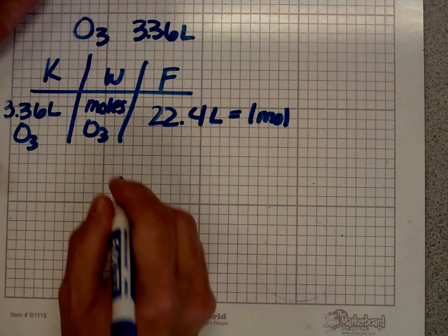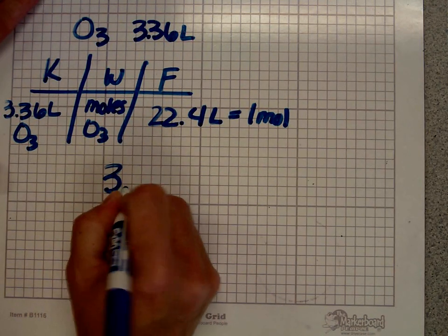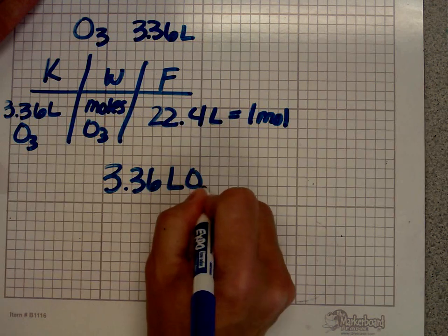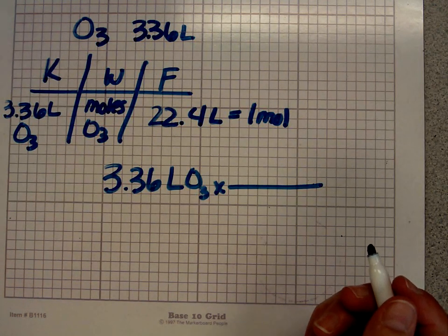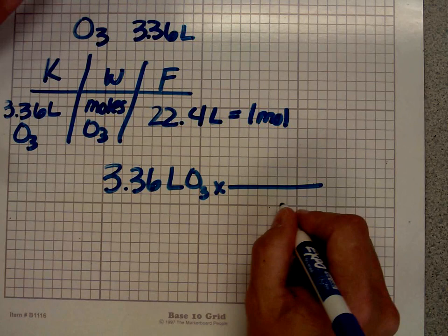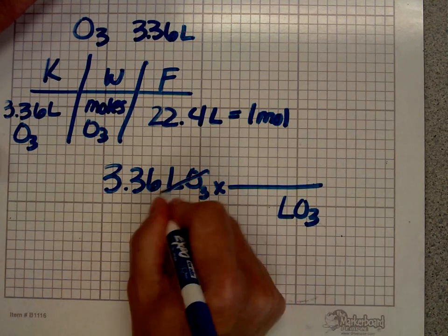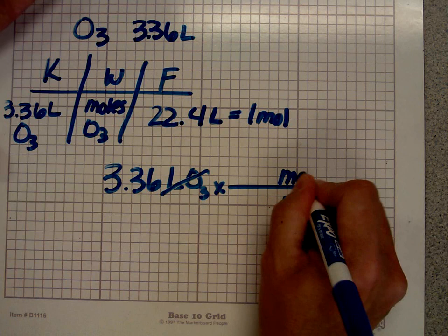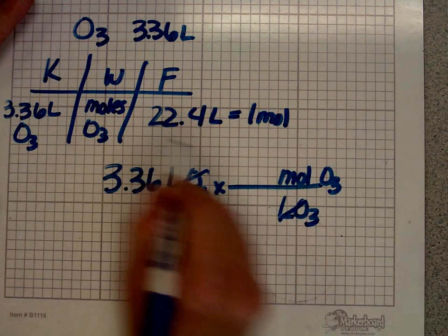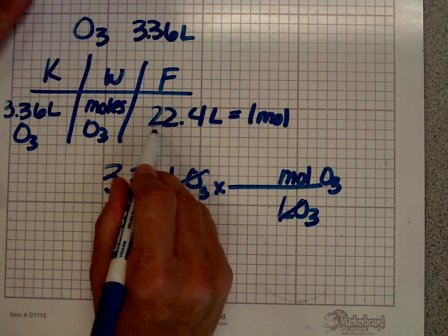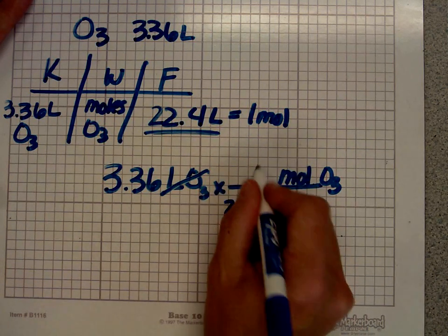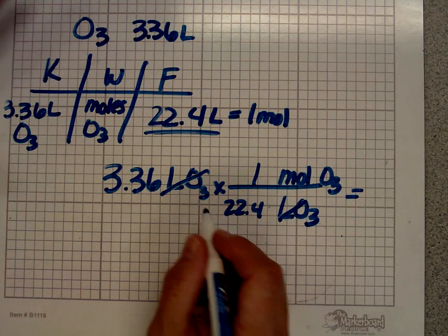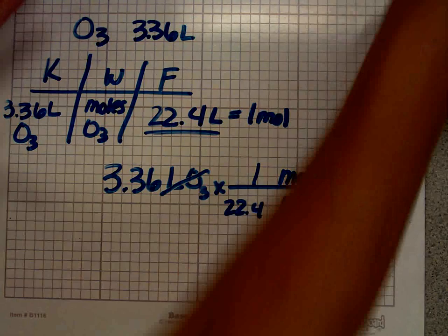The general format I always use is starting with what I know. I write down 3.36 liters of ozone and multiply it by something. I want to get rid of liters of ozone and be left with moles of ozone. The relationship is 22.4. Since 22.4 is next to the letter L, I put it next to the L here. There's a one next to the mole, so I put a one next to the mole up there. So I have 3.36 times 1 divided by 22.4.